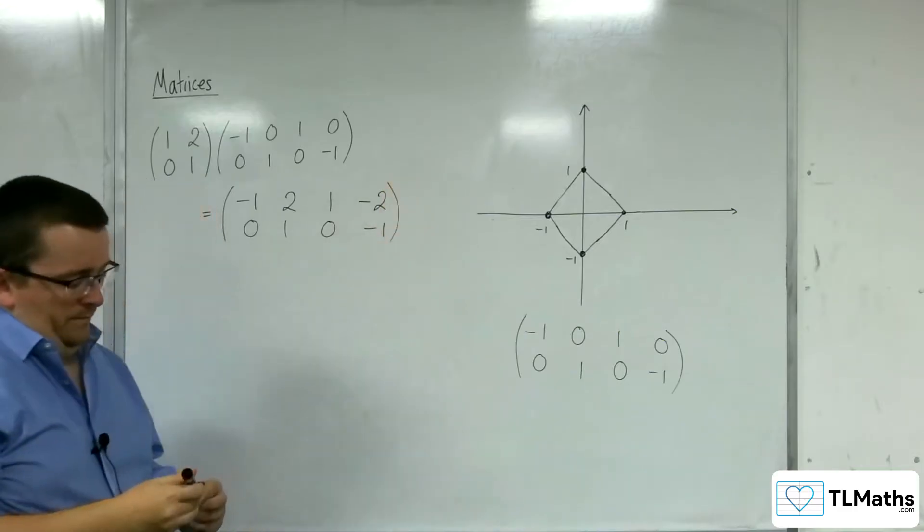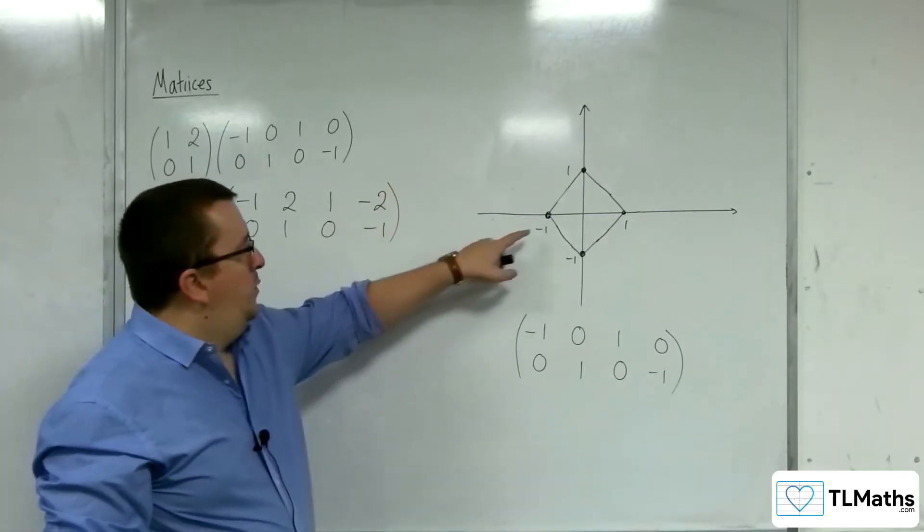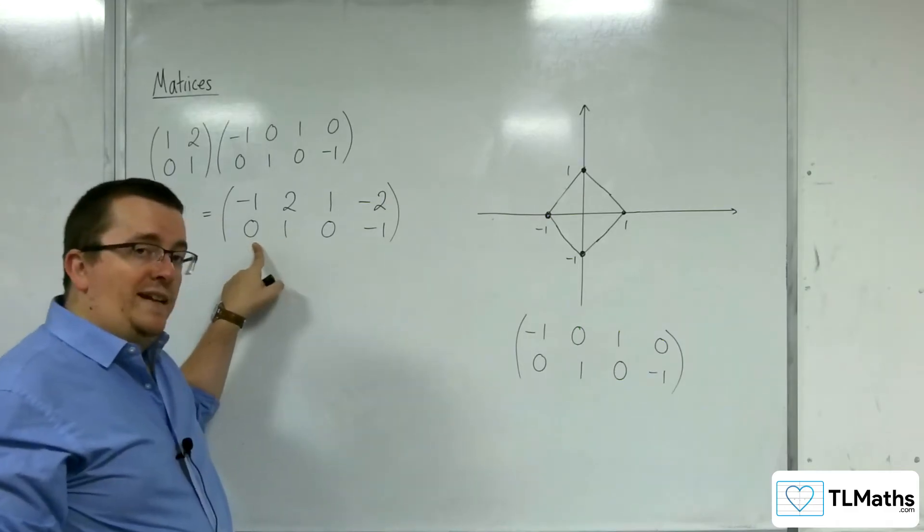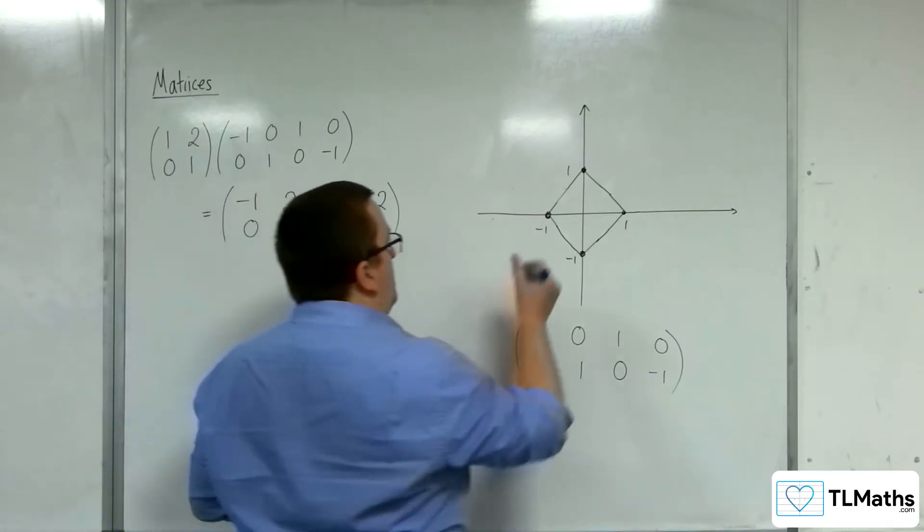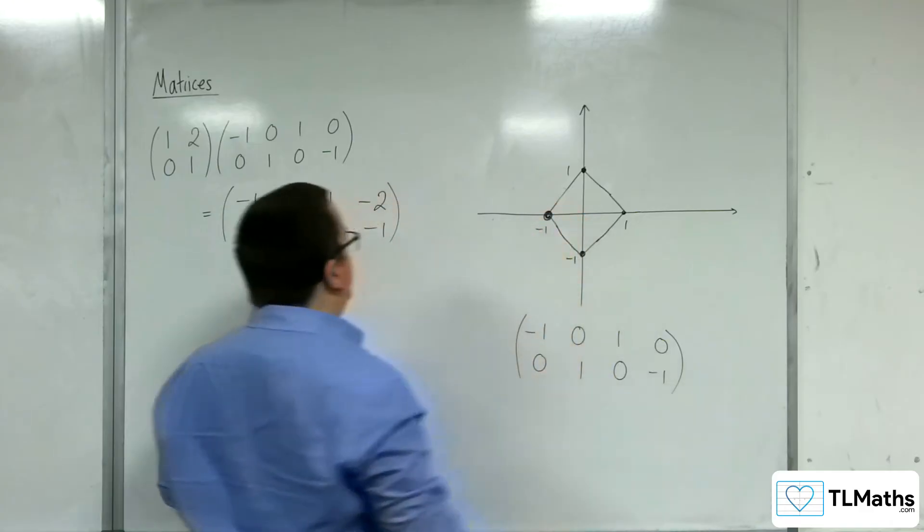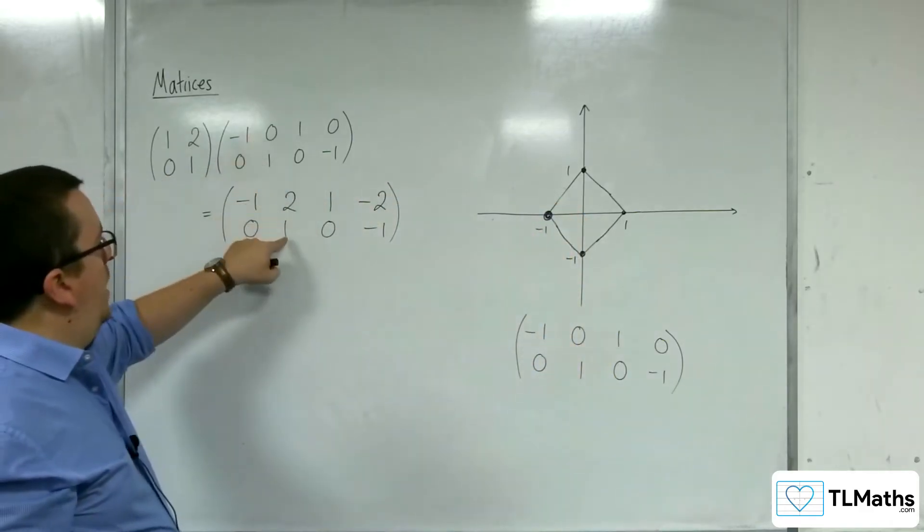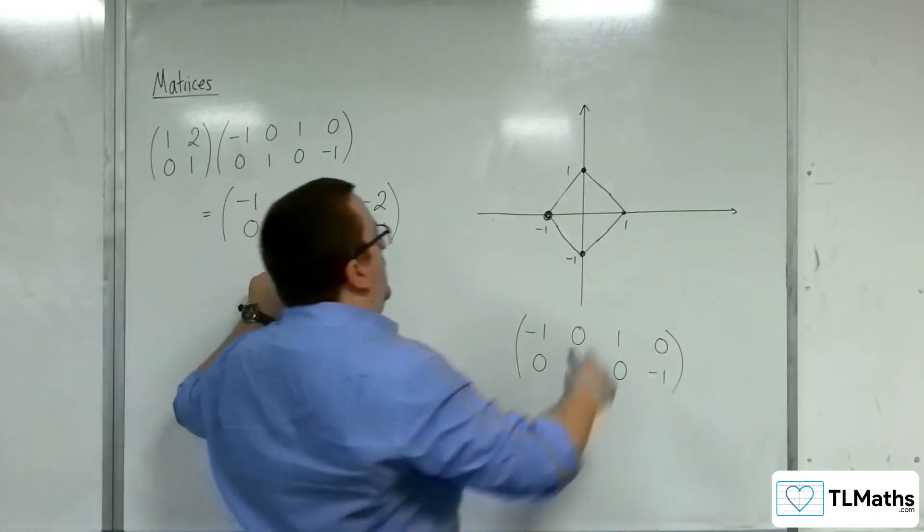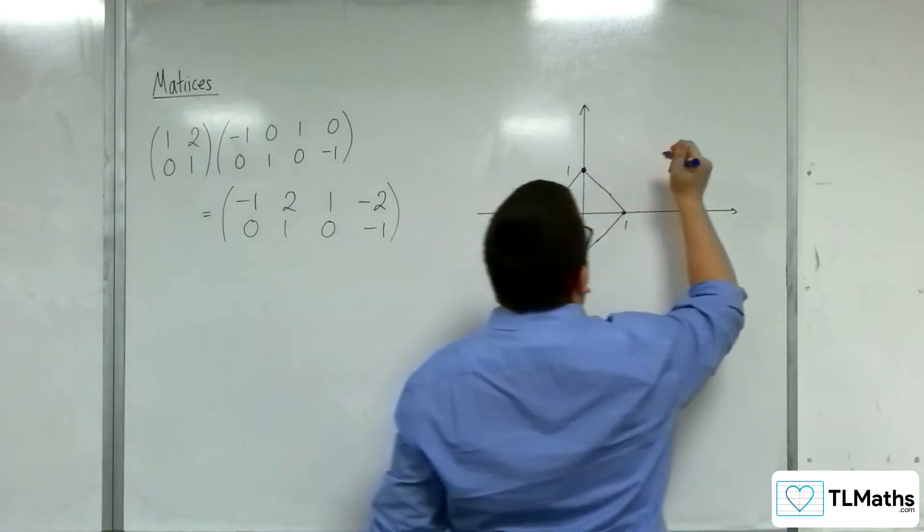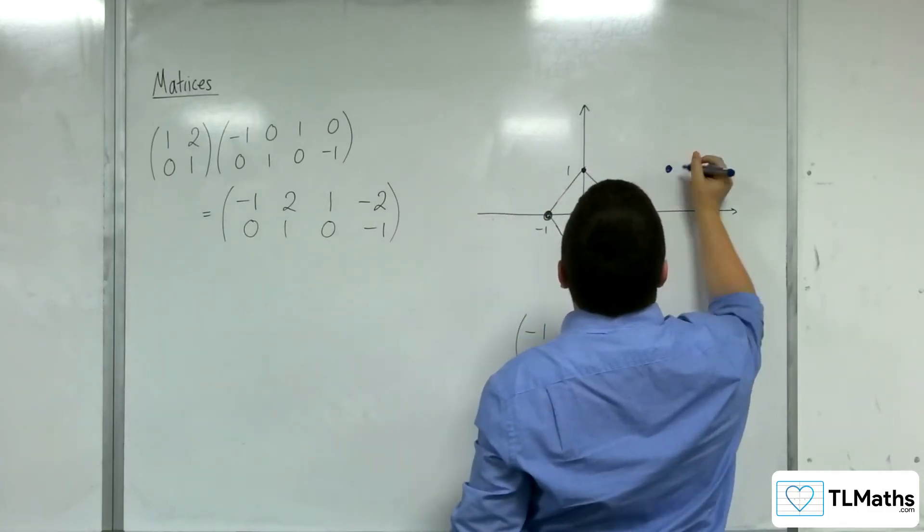So we started off with negative 1, 0. This has been transformed to negative 1, 0, so that has remained fixed. 0, 1 became 2, 1, so this point here has become 2, 1, so somewhere over here.